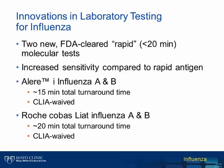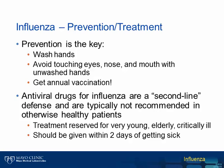In terms of prevention and treatment, the emphasis should always be on prevention as the primary defense. Patients and healthcare workers should be diligent about washing hands and avoid touching their eyes, nose, and mouth with unwashed hands. The most important method of prevention is to get the annual influenza vaccination. Even when vaccine effectiveness may be lower than hoped for, there is evidence the vaccine may help reduce the severity of disease. Antiviral drugs are available but should be considered a second-line defense, typically reserved for very young, elderly, or critically ill patients, and for optimal results should be given within the first 48 hours of getting sick.